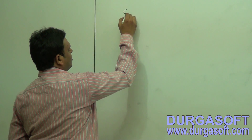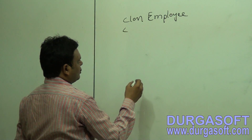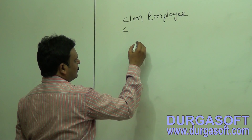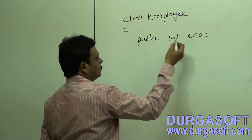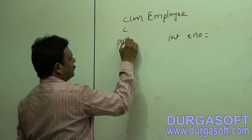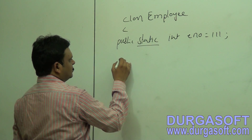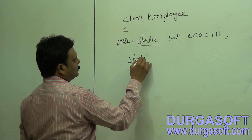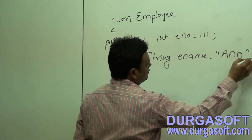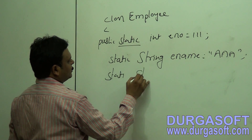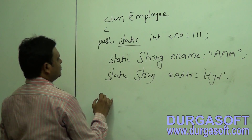For example, I have taken class Employee. Inside this class Employee, I am going to declare a number of variables. Public static int employeeNumber, static String employeeName, and static String employeeAddress equal to 'hello watch'. Like this, three variables we have taken.